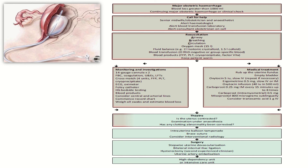If medical management fails, shift the patient to theatre. In theatre, go for balloon tamponade, B-Lynch brace suture, and consider interventional radiology. Then proceed to surgical management and hysterectomy if needed, and shift the patient to HDU.